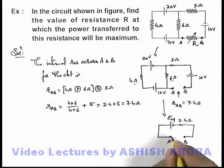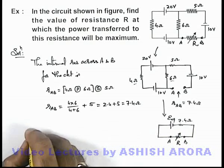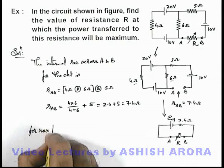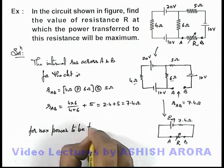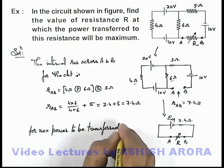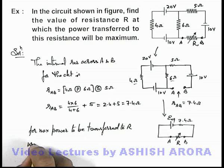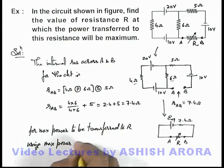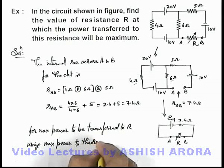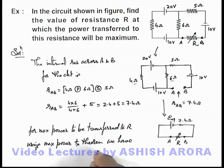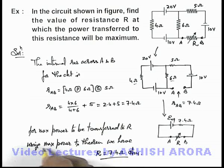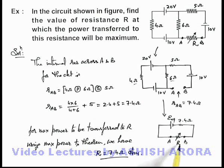Now if we just place this resistance R back between A and B, then in this situation we can directly state that for maximum power to be transferred to R, using the maximum power transfer theorem, the value of R should be equal to 7.4 ohm. That is the answer to this problem, because by the maximum power transfer theorem, the power in the external resistance will be maximum when the value of external resistance equals the internal resistance of the circuit.